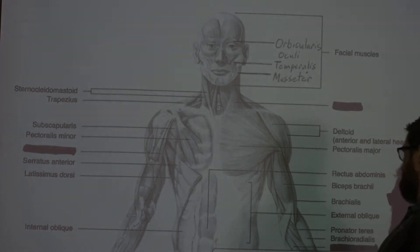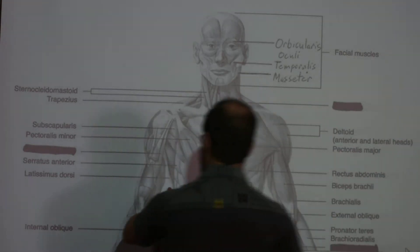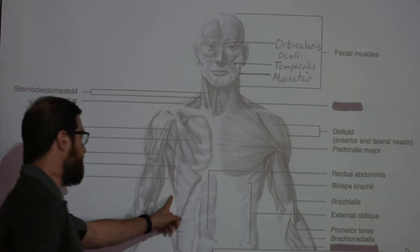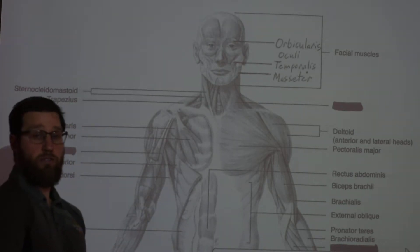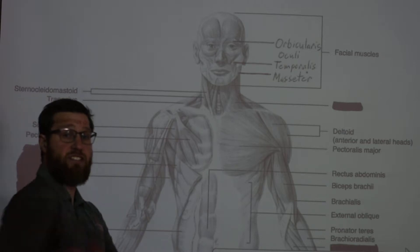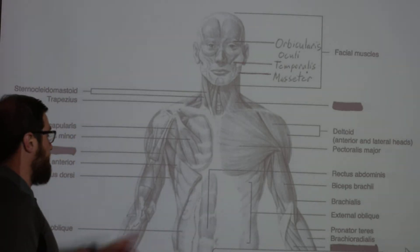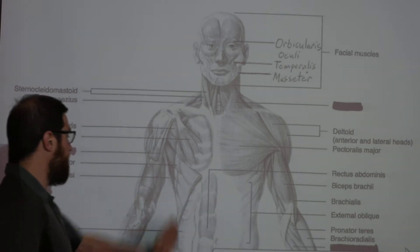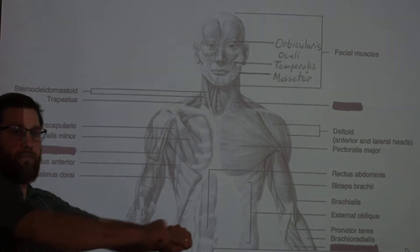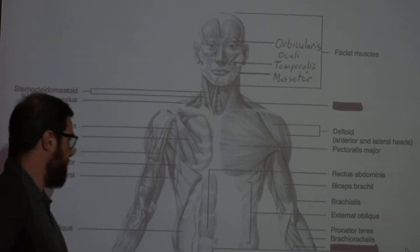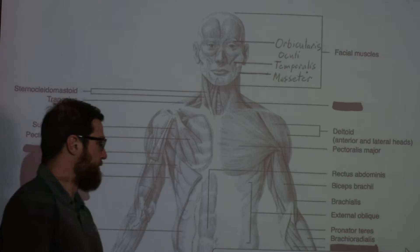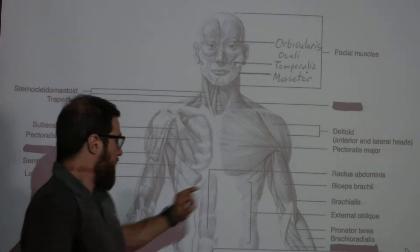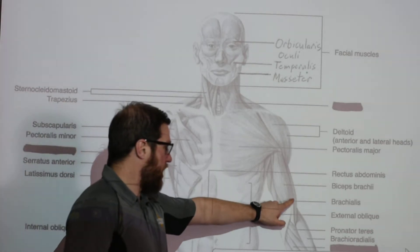The latissimus dorsi is really a back muscle. If you are involved in exercise, it's that V-shape you get in your back. It is a major arm retractor, and we'll talk more about it when we get to the posterior side.